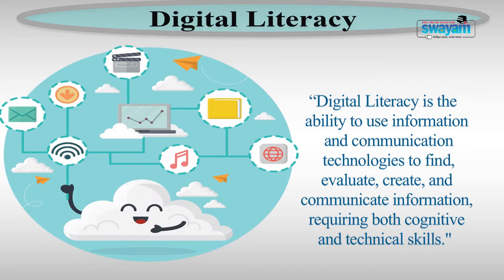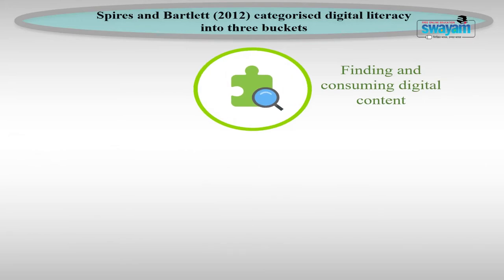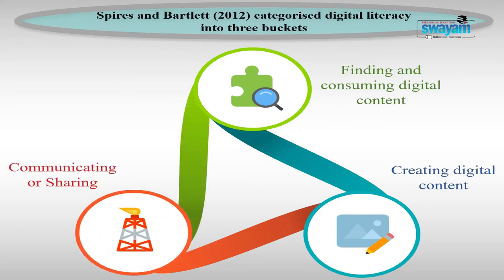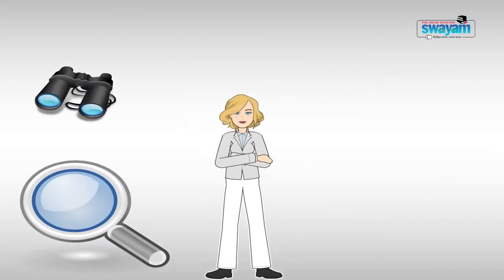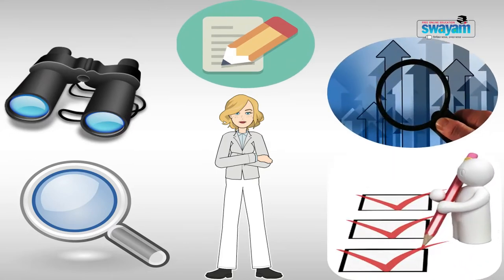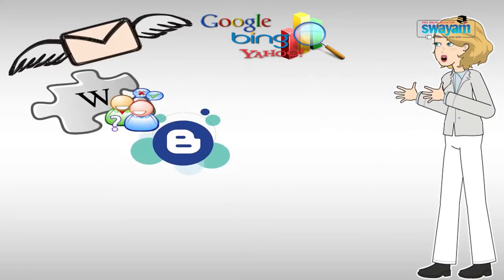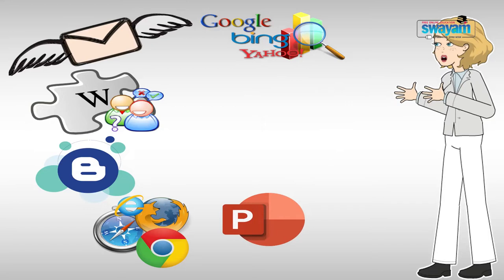It includes the understanding of uses of a wide range of digital technology for searching, retrieving and utilizing information. Spice and Bartlett in the year 2012 categorized digital literacy into three buckets: finding and consuming digital content; creating digital content; and communicating and sharing it. A digitally literate person is able to search, find, compose, analyze and evaluate information retrieved from different digital platforms. Some characteristics of a digitally literate person include understanding the use of search engines, emails, wikis, blogs, web browsers and PowerPoint, as well as the ability to create videos and knowledge of different educational software.